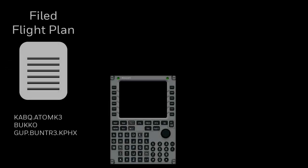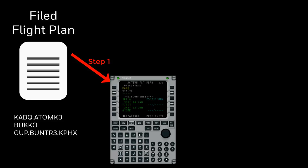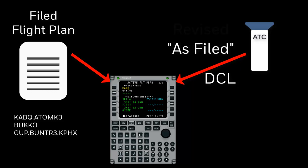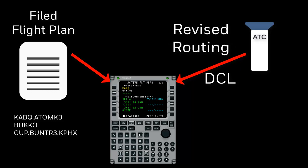Before requesting a DCL, it is important to have the filed flight plan entered into the FMS active flight plan. When ATC sends the DCL to the FMS, the clearance will either be a free text stating as filed, or if the clearance contains a reroute, a push-to-load flight plan modification will be included in the DCL. This push-to-load modification will only work if the FMS active flight plan contains the filed flight plan.